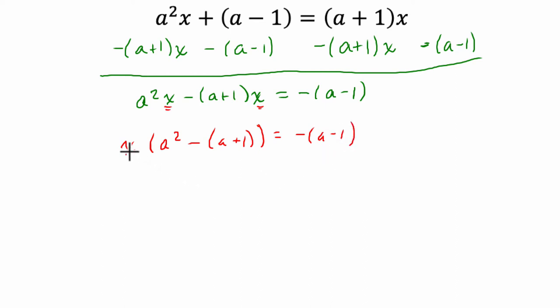So now, I've got to solve for x, let me just divide by this whole term, a squared minus a plus 1 on both sides. So we have a squared minus a plus 1. We're divided by this whole thing here.